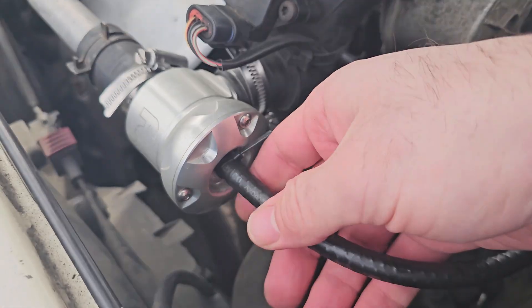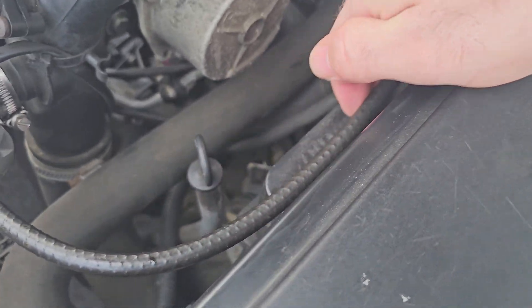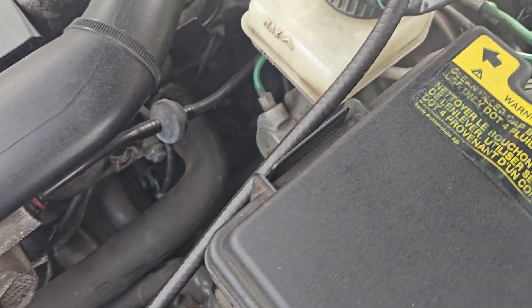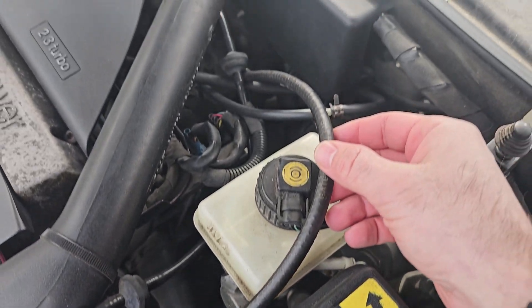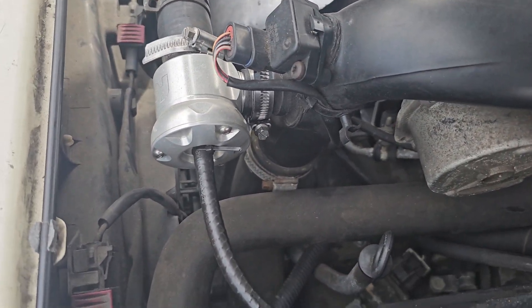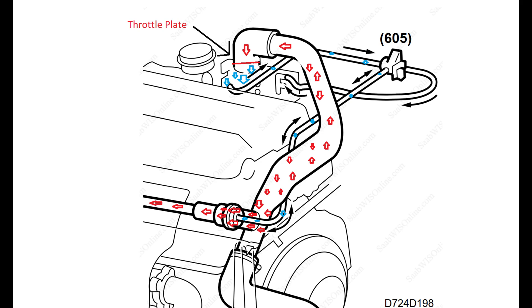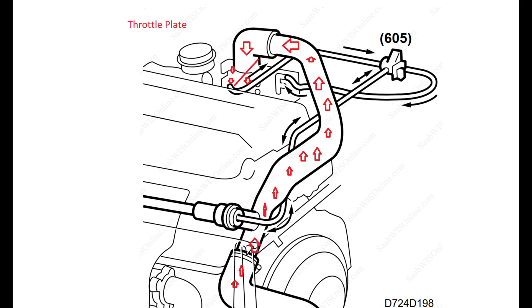So, what is this bypass valve? To keep things short, on a turbocharged vehicle, when you press on the accelerator pedal, you build up positive pressure in your intake track, right here. Upon releasing the pedal, that pressure remains and needs to be vented so the pressure does not cause turbulence and stuttering upon reapplying the throttle.